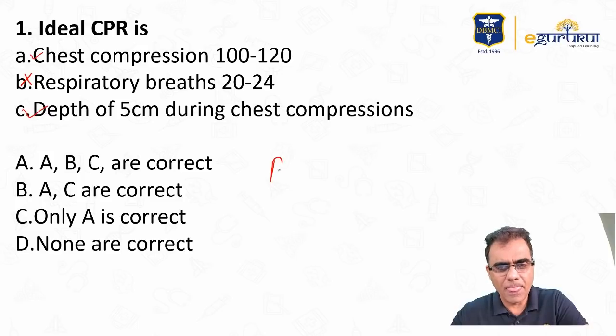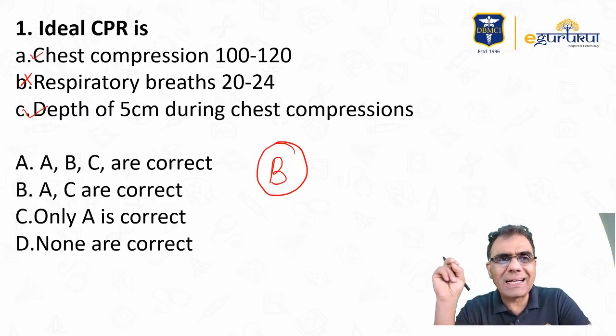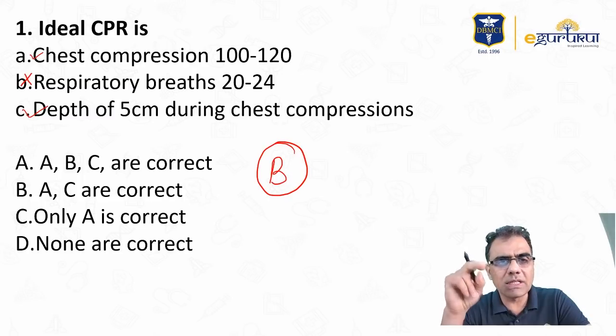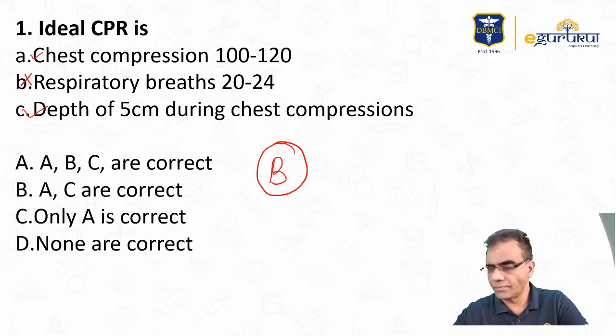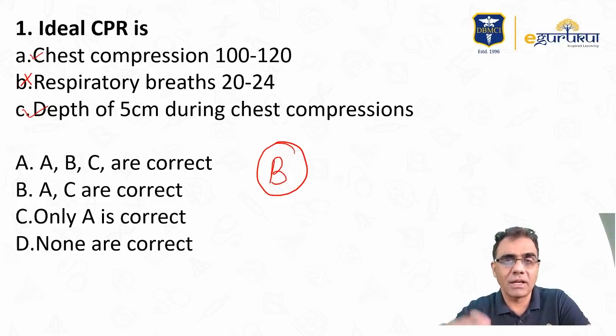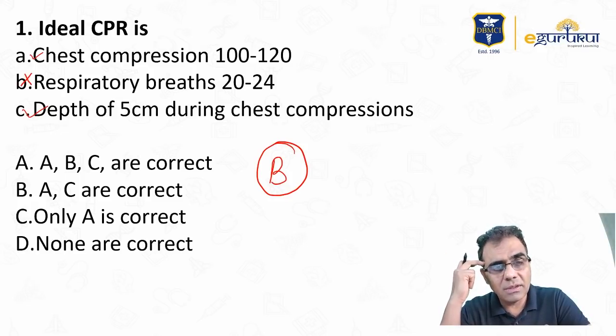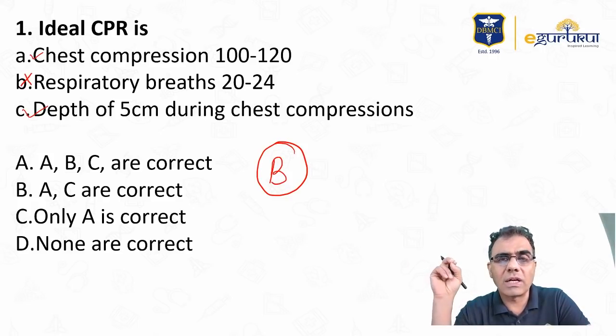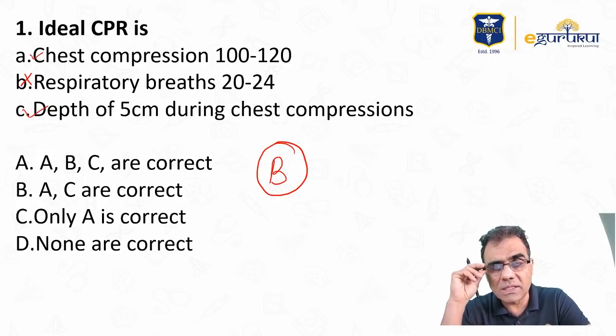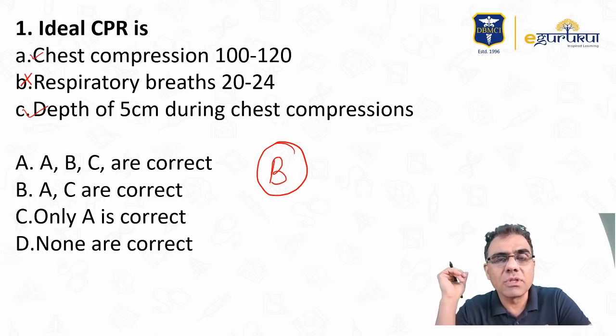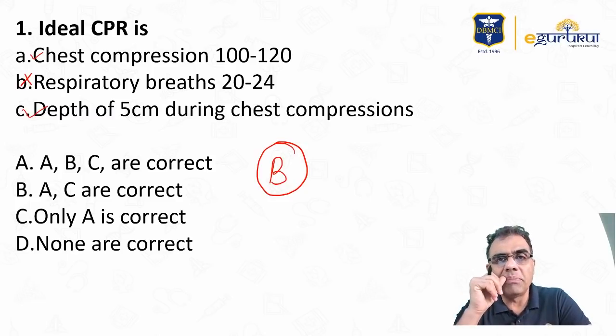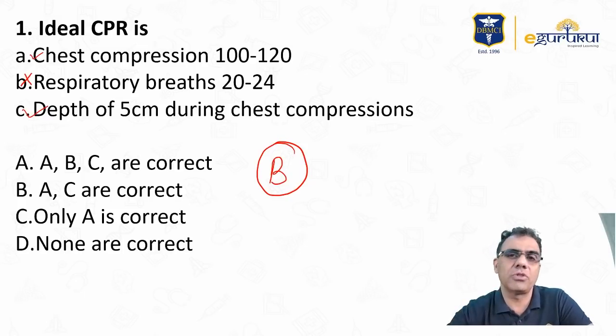But if it would have been given pediatric CPR, then chest compression would have been changed. Chest compression for children is one and a half inch, not two inches. And this was very much expected regarding breath rate. Many people I know would have marked respiratory rate 20 to 24 by mistake, considering it as pediatric. But respiratory rate has changed only for pediatric age group.